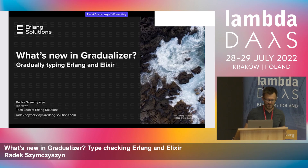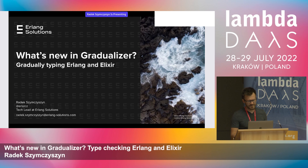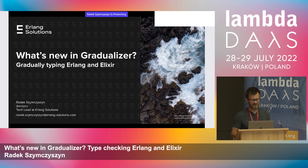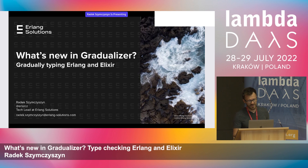I want to talk about what's new in Gradualizer and in general about gradually typing Erlang and Elixir. But first, why bother? Erlang is a dynamically typed language, so how can we benefit from having static or gradual type checking? I think the first reason is clarity: using specs and types helps us clarify the interfaces and the intended use of our code.